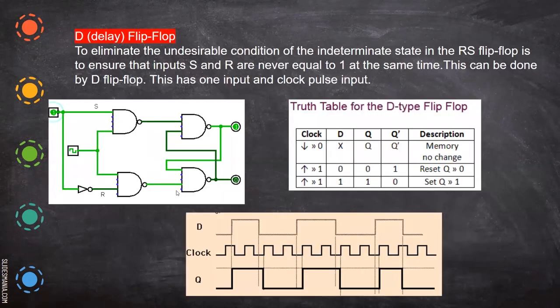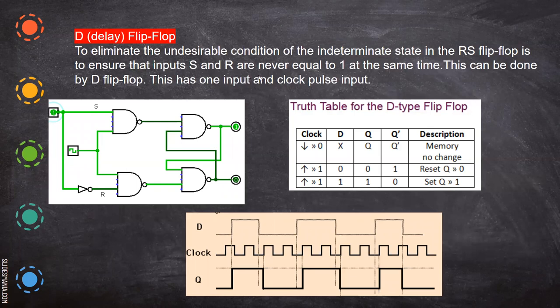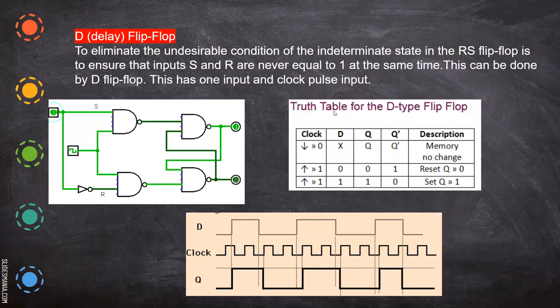So how do we avoid that? By connecting both S and R to a single input — one is given direct and the other is given as its complement. So when S is 1, R is given as complement, meaning R will be definitely 0, and vice versa. This way, giving both inputs as 1 is avoided and that particular problem is eliminated. The indeterminate state in the RS flip-flop is eliminated by ensuring S and R are never equal to 1 at the same time.